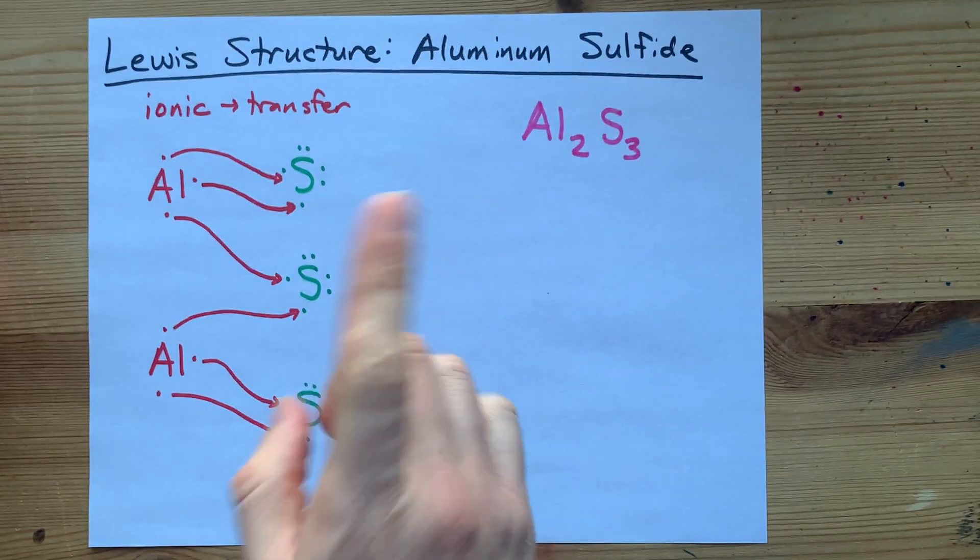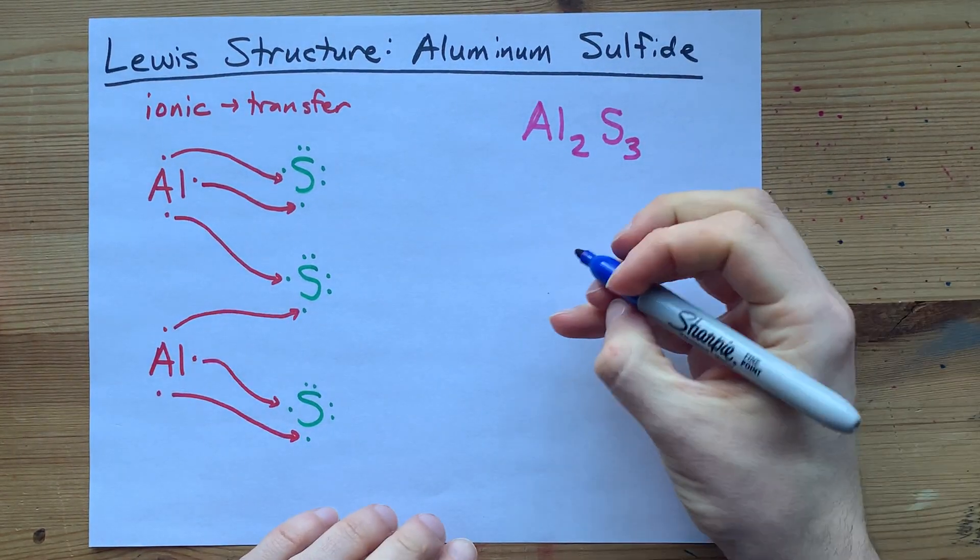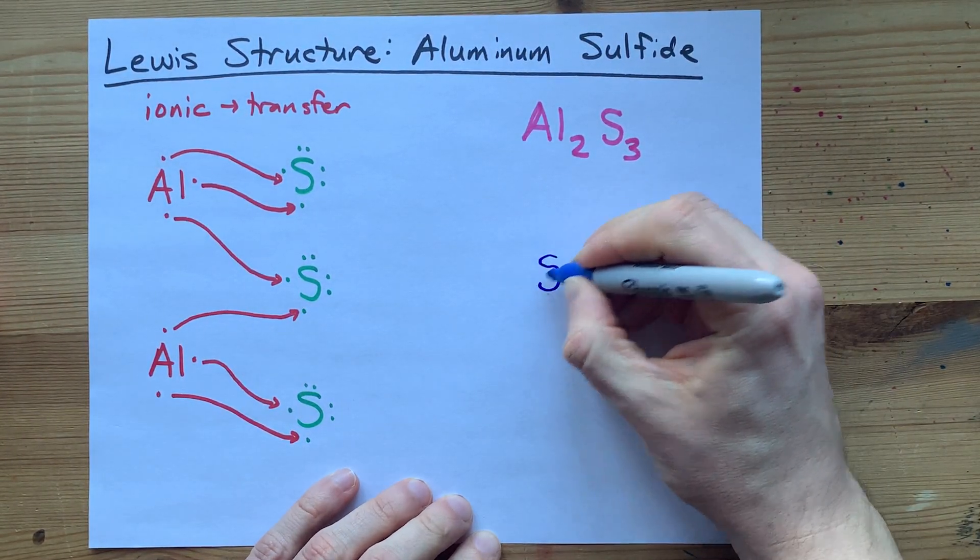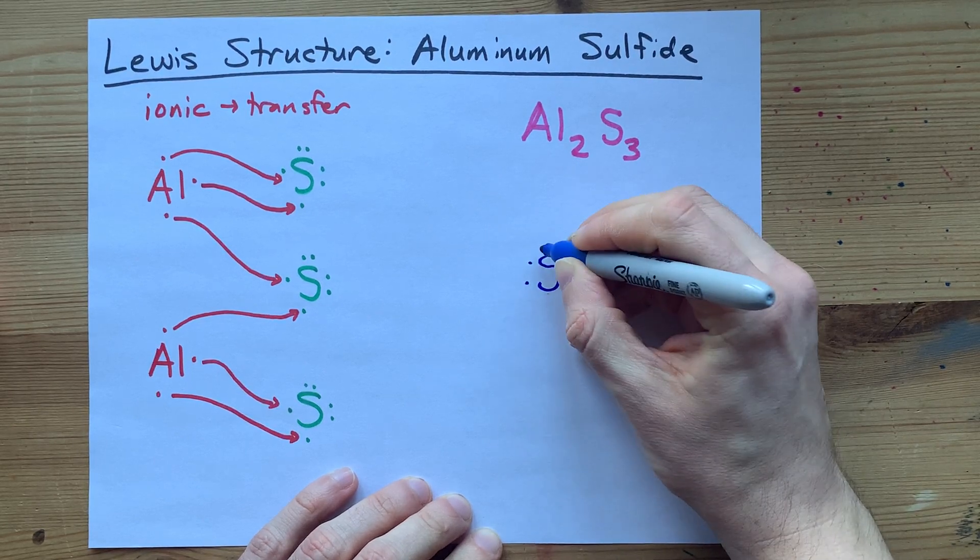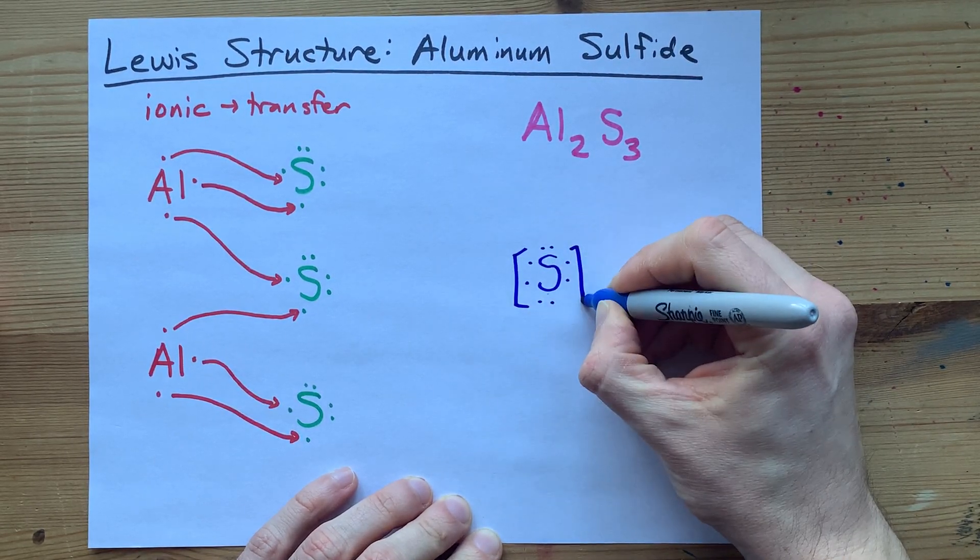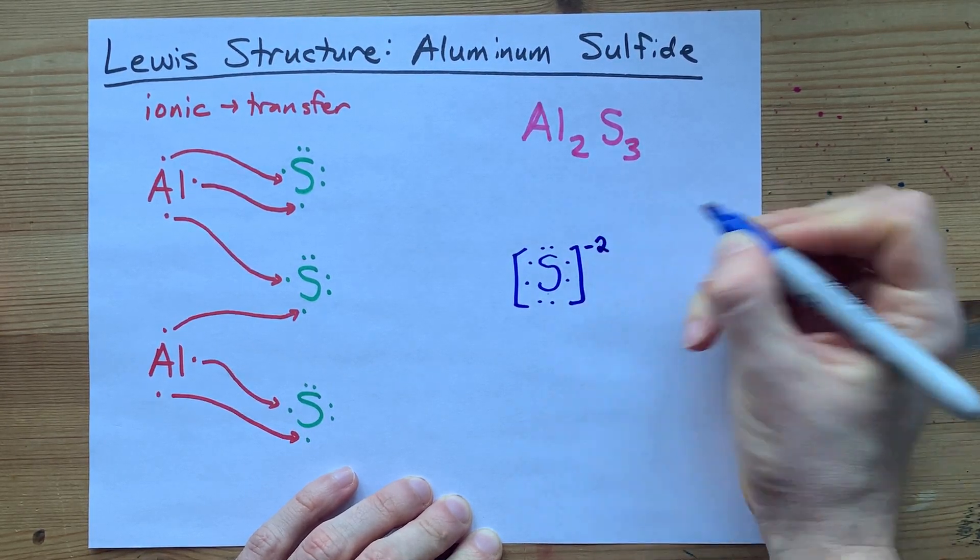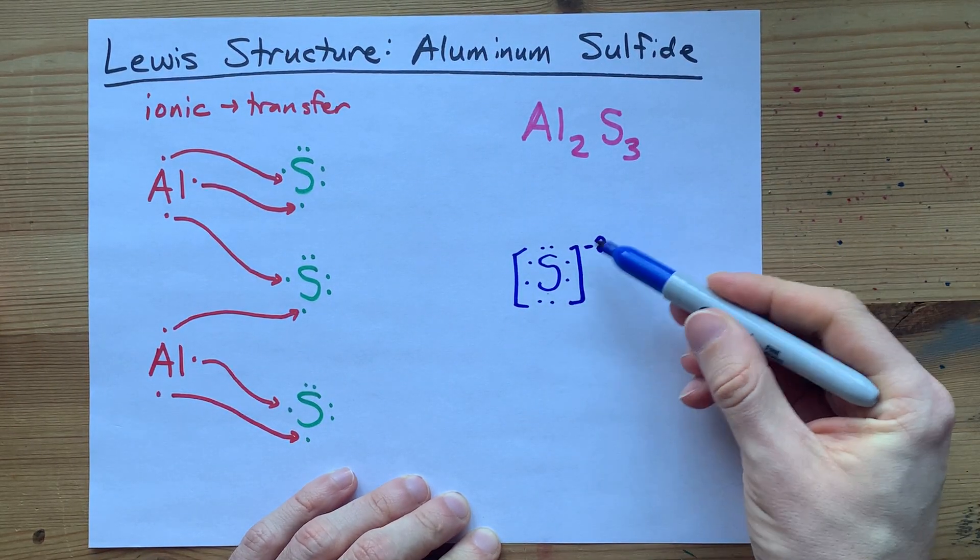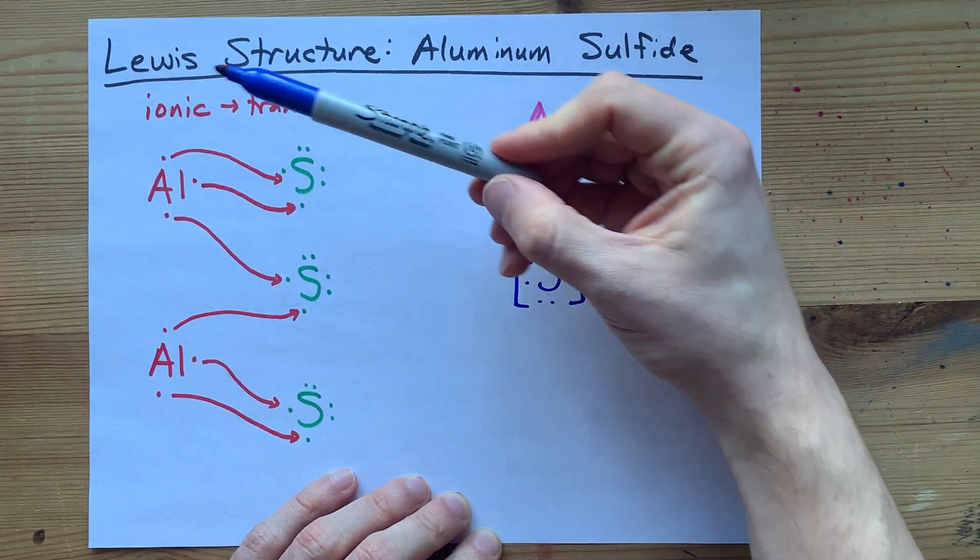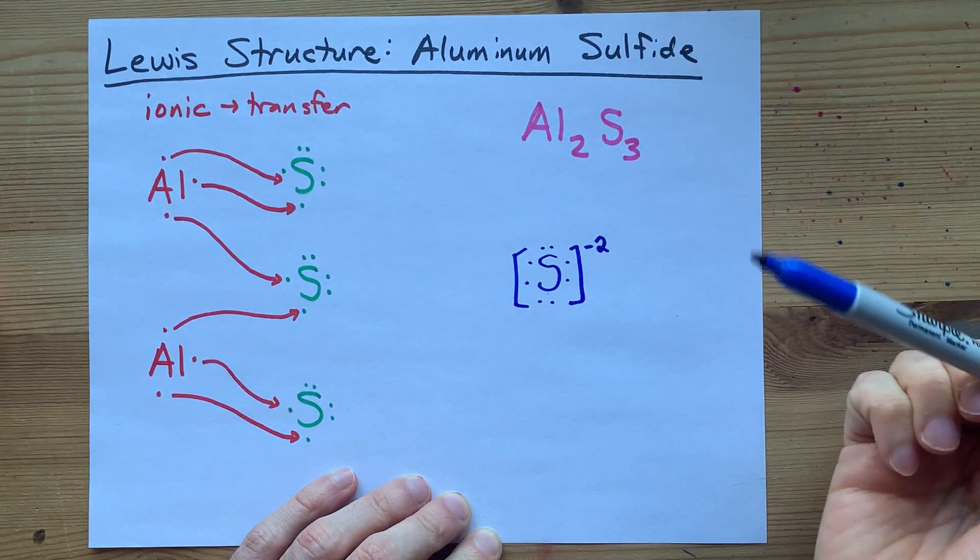But you came for the completed Lewis structure. So, give yourself a sulfur in the middle with eight electrons around it, and that's two more than it brought originally. So, that means it has a charge of minus two. The charge here makes it an ion. Oh, look. It's an ionic compound.